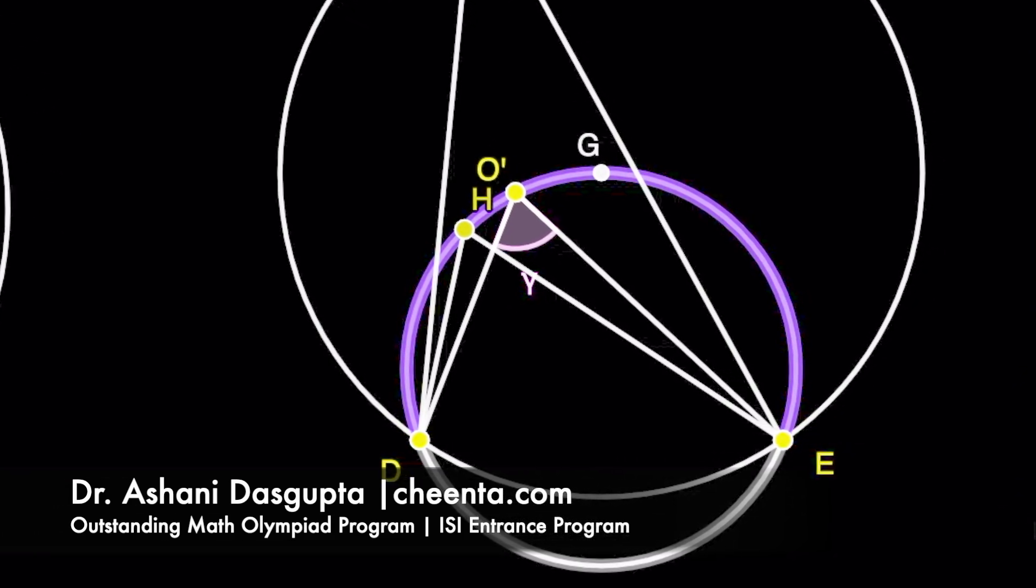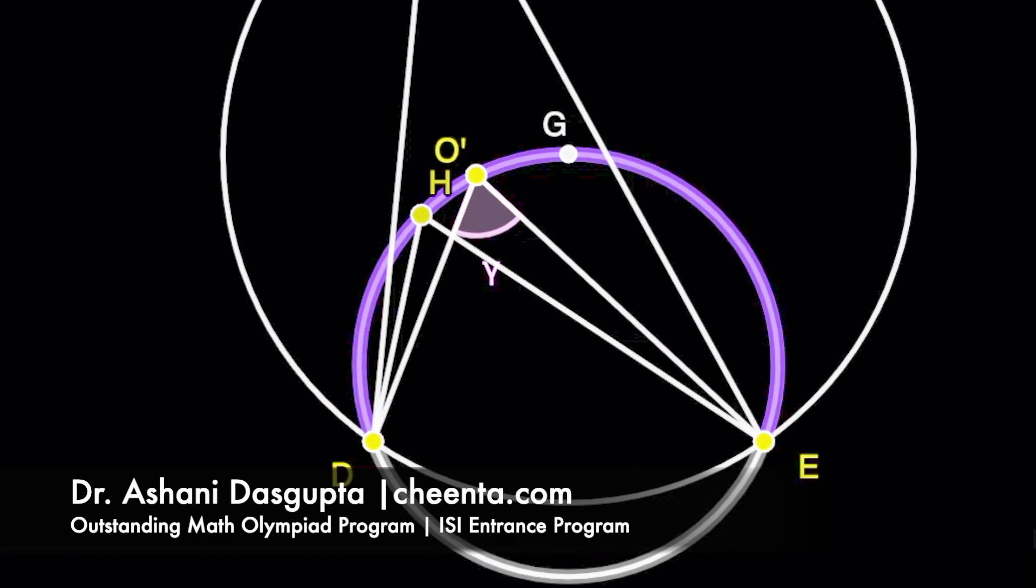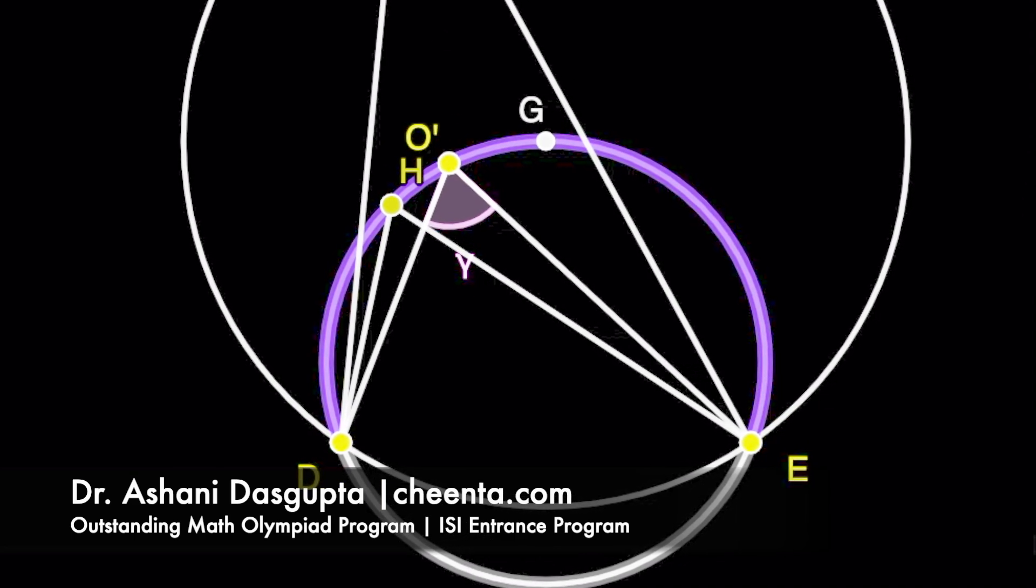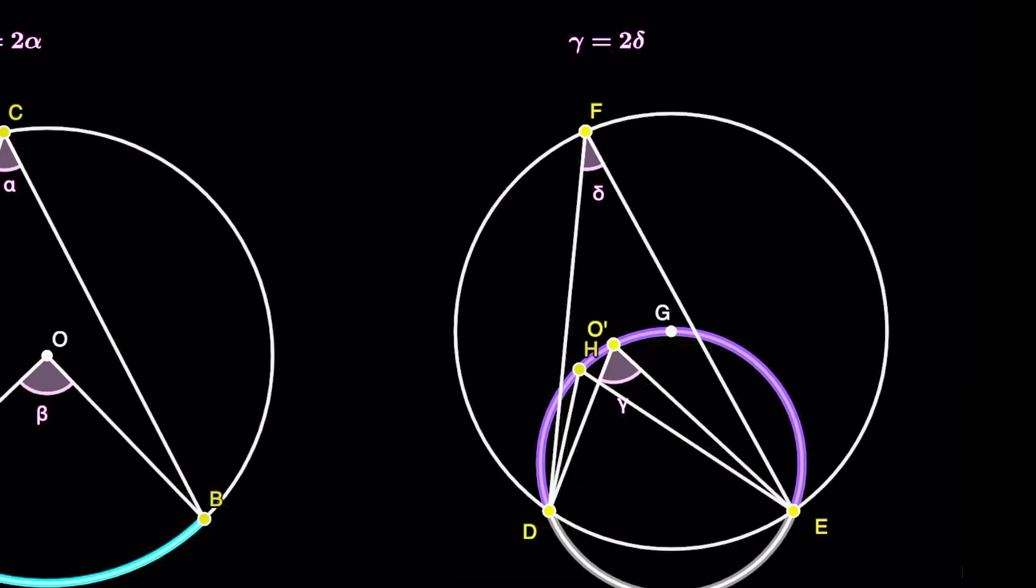That is, this angle D, H, E will be twice angle D, F, E. Not only angle G, but all the points on this larger arc D, G, E will have this property.